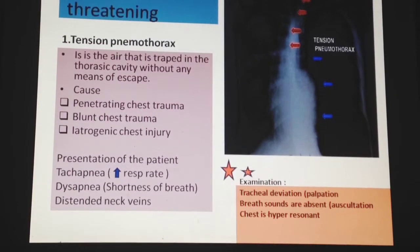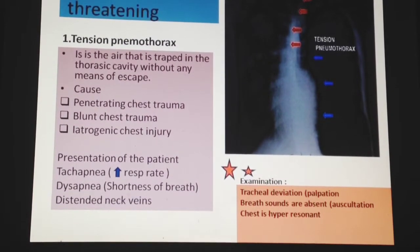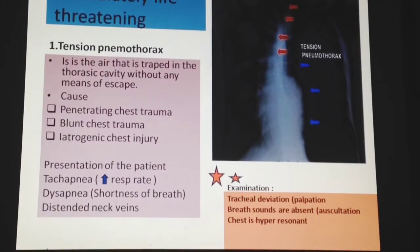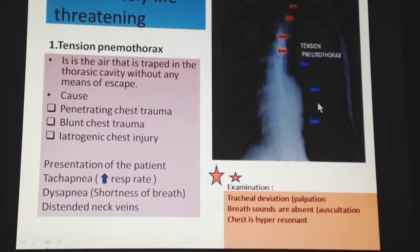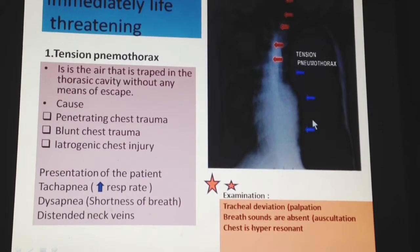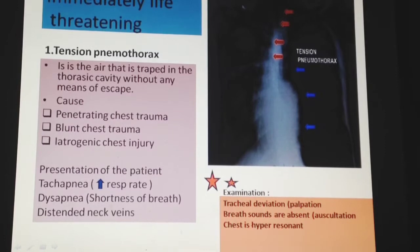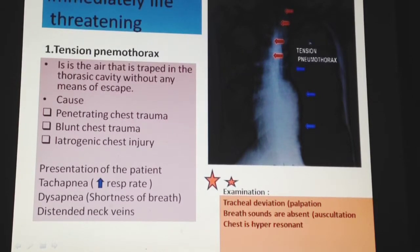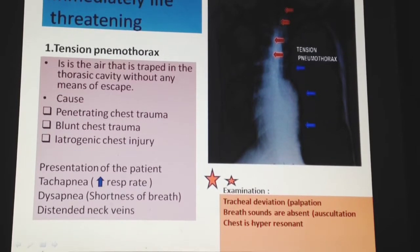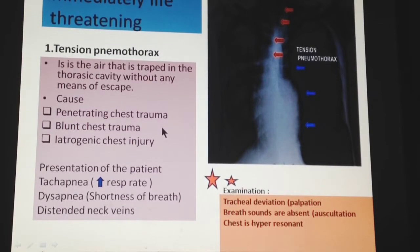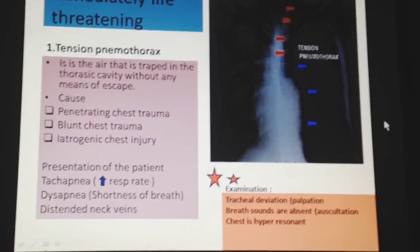The first immediately life-threatening condition is tension pneumothorax, where air is entrapped in the thoracic cavity with no means of escape. On a normal radiograph, X-rays cannot pass through bone so bones appear white, and they pass through air so that area appears darker. A large concentration of air in the affected area will appear very dark, allowing diagnosis of entrapped air. This condition is caused by penetrating chest trauma, blunt chest injury, or iatrogenic chest injury.